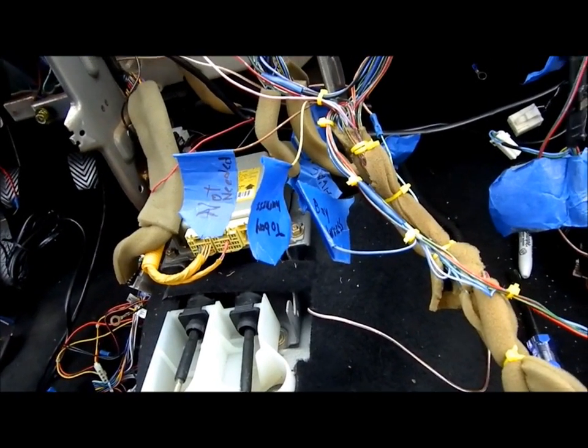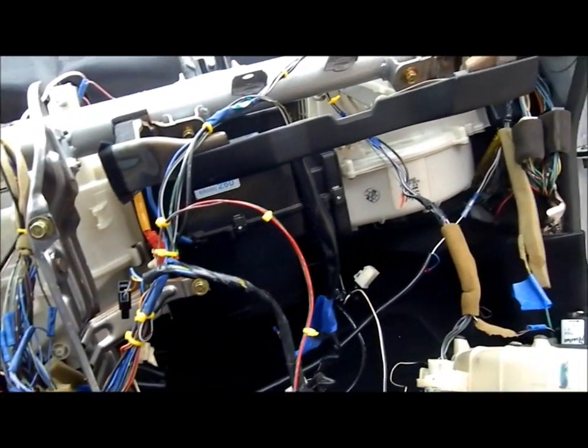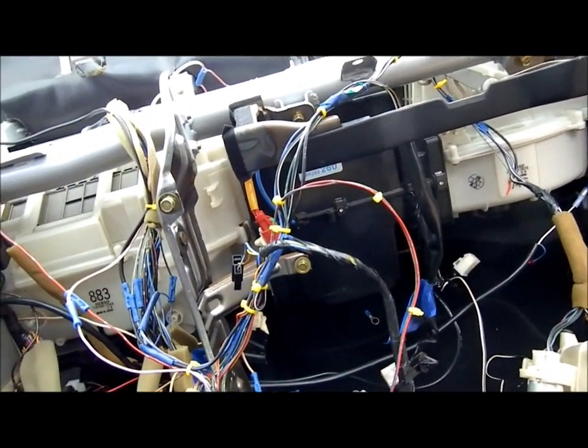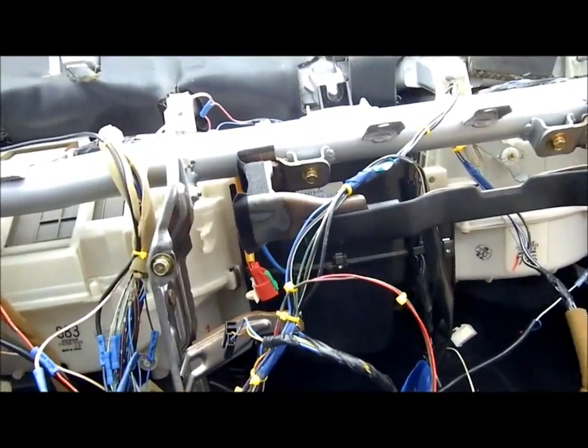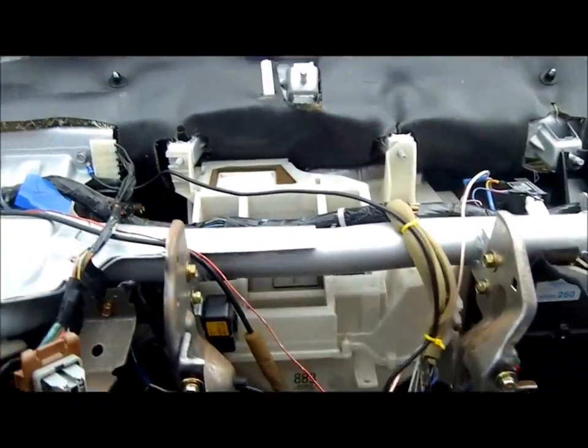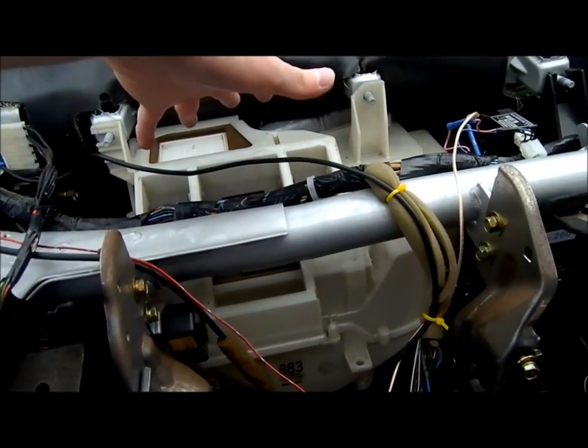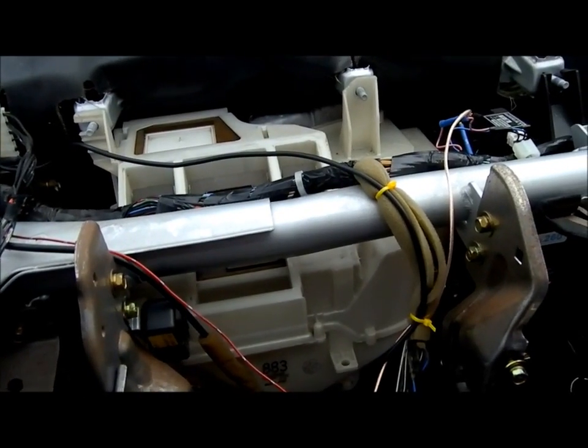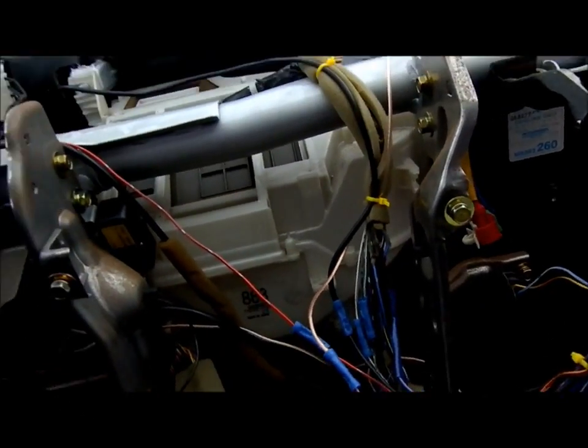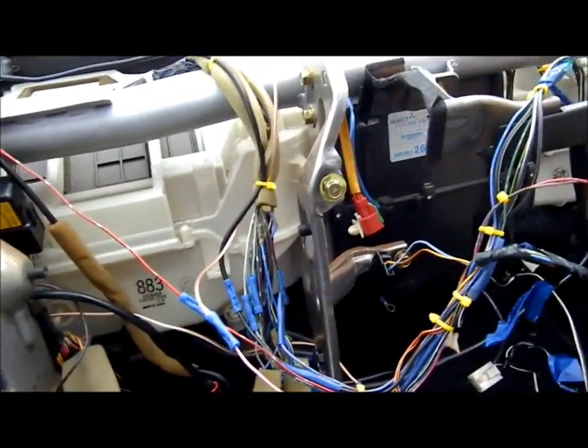So yeah, that's that. The Diamante heater boxes should in theory go right in. In theory, I say that because there's other things that are supposed to work in theory on the Mirage and haven't, but we'll make it work somehow. The vent that goes here just went right onto the Diamante box, so that was an easy part. The box has the same mount points.